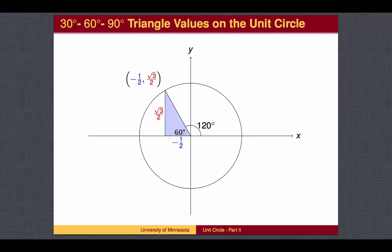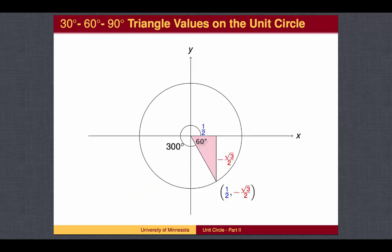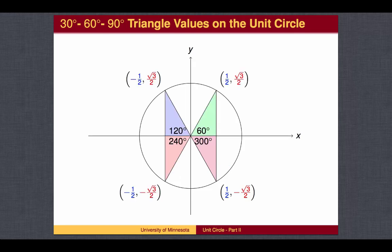Similarly, we can find cosine and sine values for 60 degrees back from 180, which is 120; 60 degrees forward from 180, which is 240; and 60 degrees back from 360, which is 300. Here is the set of all four angles where the cosine value is plus or minus 1 half, and the sine value is plus or minus square root of 3 over 2.